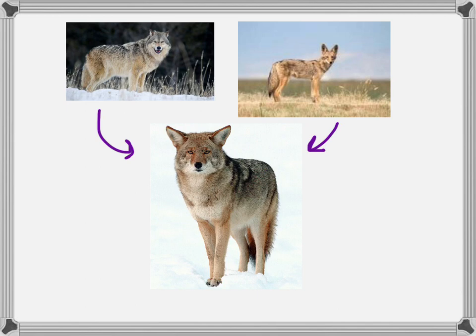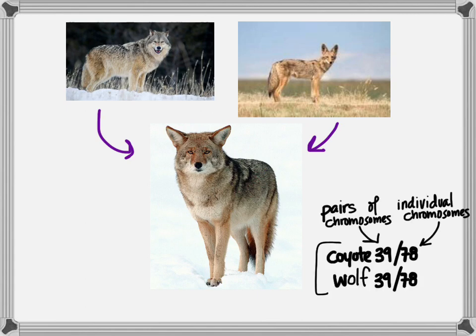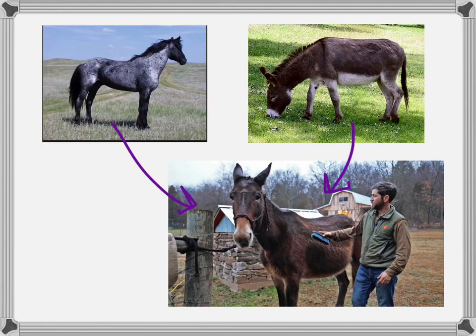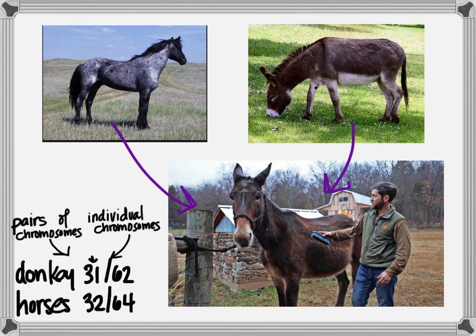Let's talk about wolves and coyotes. Wolf and western coyote can make babies, and their babies can also make babies. Why? They have the same number of chromosomes — 39 pairs, 78 individual chromosomes. Now if you remember, we also talked about horses and donkeys. Horses and donkeys can make babies, but their babies — the mules of the world — cannot make babies. Why? Because horses and donkeys have different numbers of chromosomes. Donkeys have 31 pairs; horses have 32 pairs.